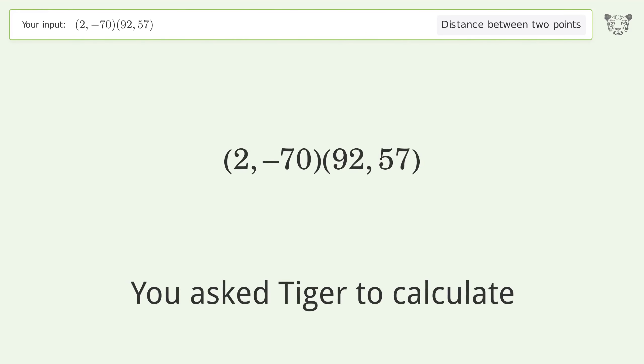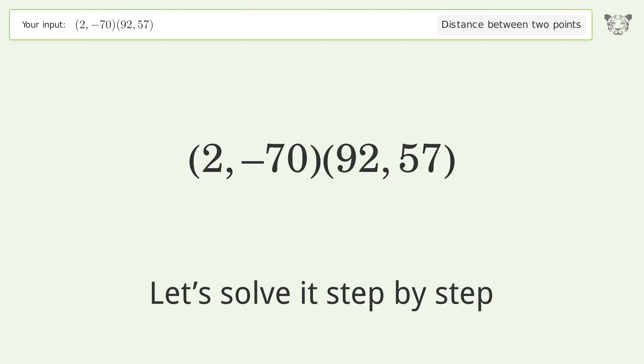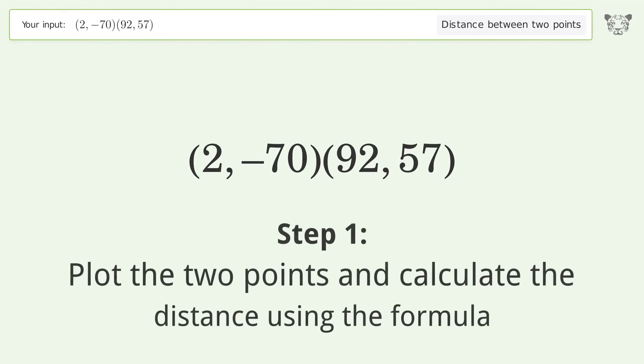You asked Tiger to calculate the distance between two points. The distance between the two points is the square root of 24229, or 155.657. Let's solve it step by step: plot the two points and calculate the distance using the formula.